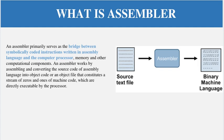Assembler primarily serves as the bridge between the source text file and the binary machine language of zeros and ones, for memory and other components of the computer. Assembler works by assembling and converting the source code of assembly language into object code or an object file that constitutes a stream of zeros and ones of machine code.